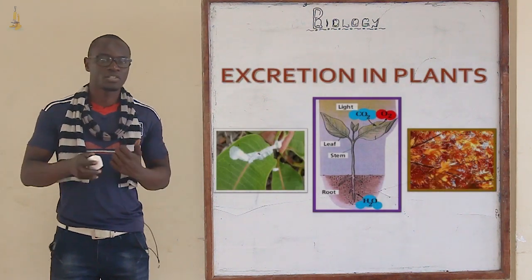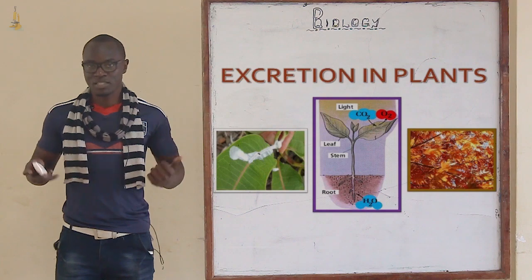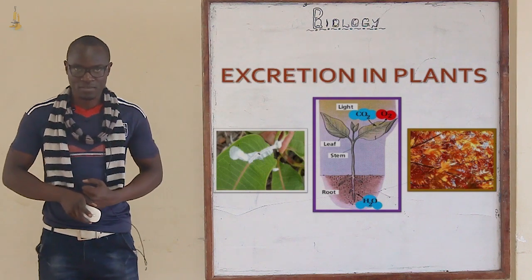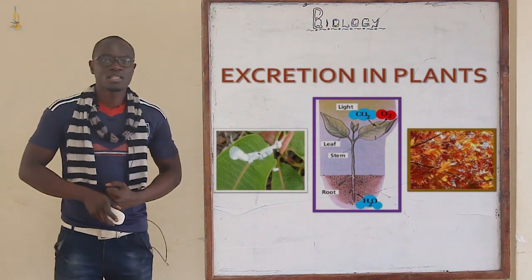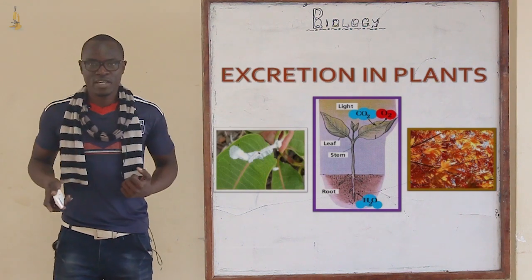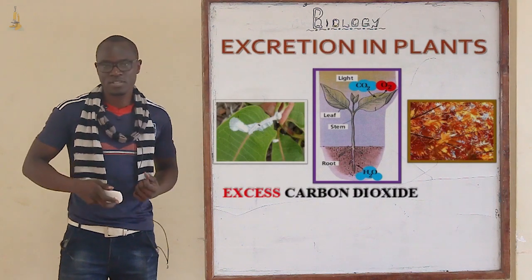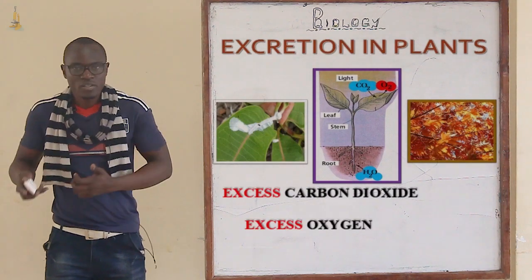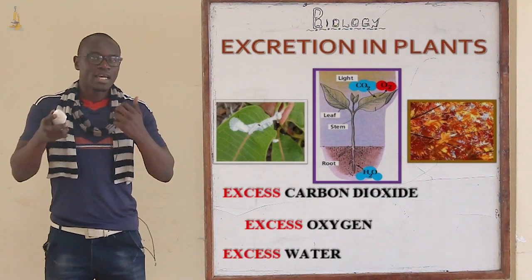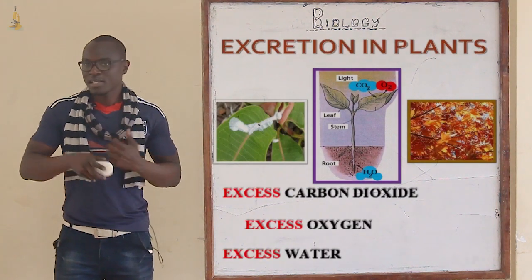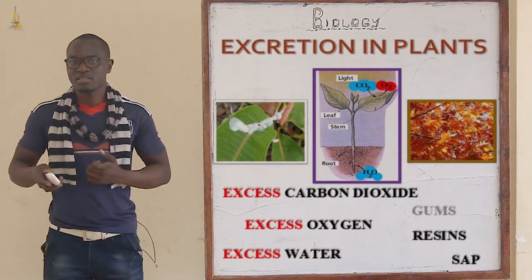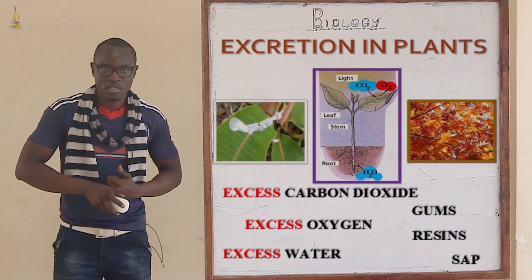Now let's look at excretion in plants and how it basically takes place. Plants have various excretory waste products, for example carbon dioxide, oxygen, excess water, sap, resins, and gums.